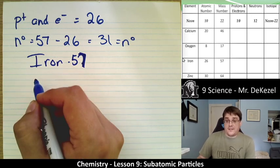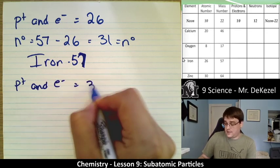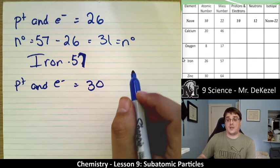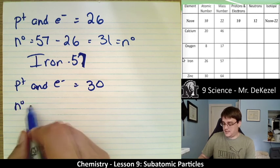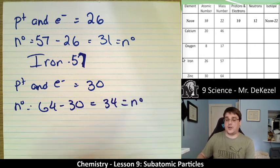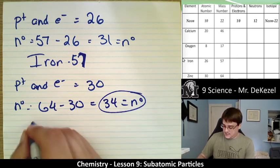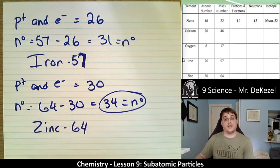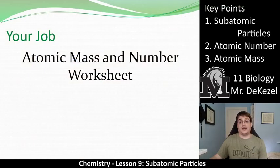For zinc: protons and electrons are 30 because that's its atomic number. We take the mass number 64 and subtract 30 to get 34 neutrons. We write this as Zinc-64. There are a bunch of problems for you to do — your assignment is the atomic mass and number worksheet, so go ahead and give those a try.